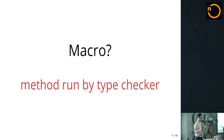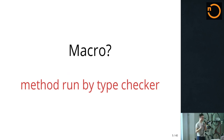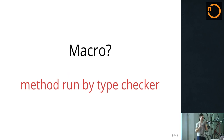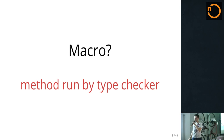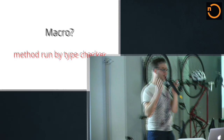I think there's a lot of really cool things to be said about macros, but let's start with the beginning. It's just a method — a method run by the type checker. So you're writing something that's running in the compiler's domain.